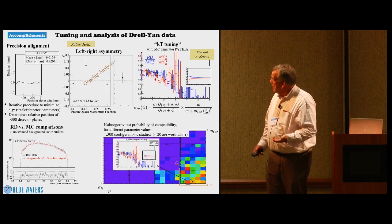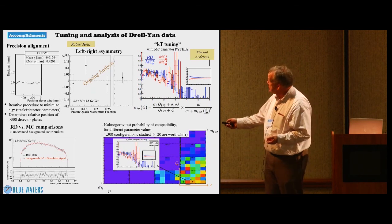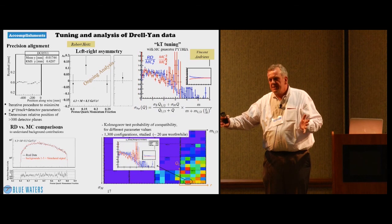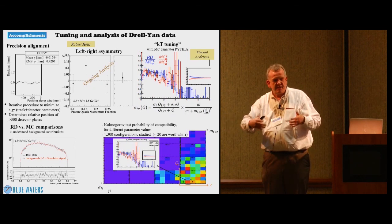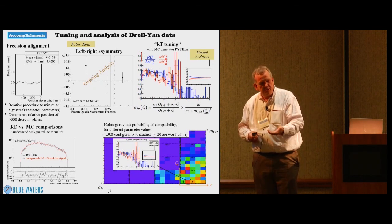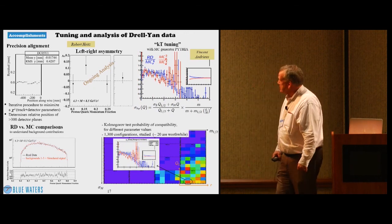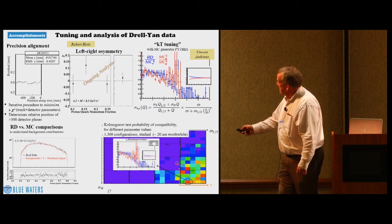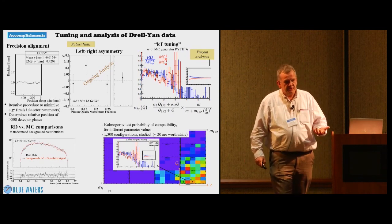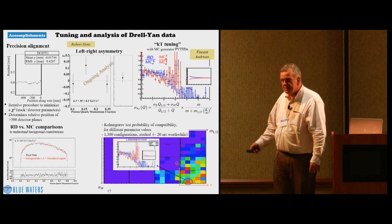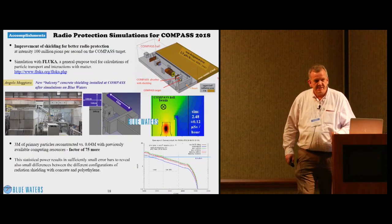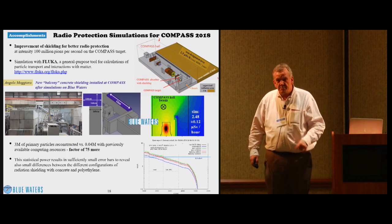Then it has been used by Robert Heitz who is giving a poster later today to improve the alignment of our detector. The 60 meters of detectors consists of 350 planes of detectors that had to be aligned to a few microns. This cannot be achieved with lasers only. One needs to use actually physics data and then optimize the positions. It has been used by one of our post-docs in Illinois to optimize the parameterization of transverse momentum in the event generators. And it's also being used by Robert Heitz in his thesis physics analysis.